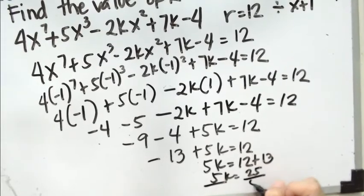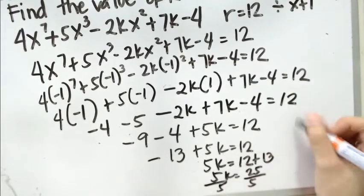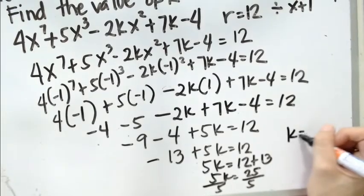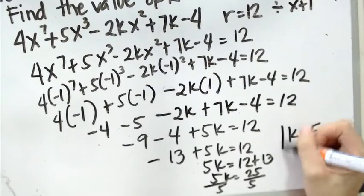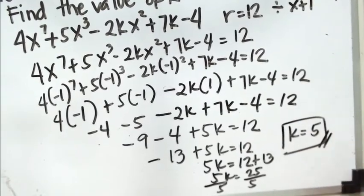Isolating k, we need to divide both sides by 5. So we have k equals 25 divided by 5, which is 5. Therefore, the value of k here is 5.